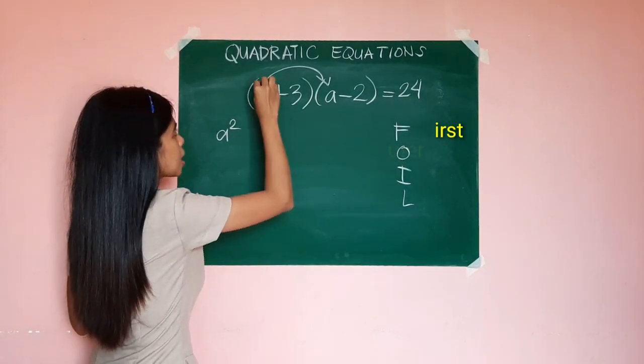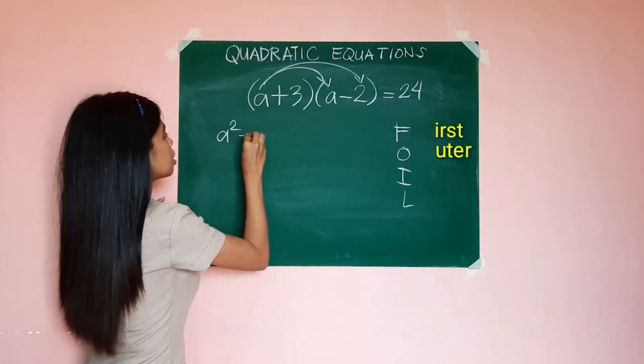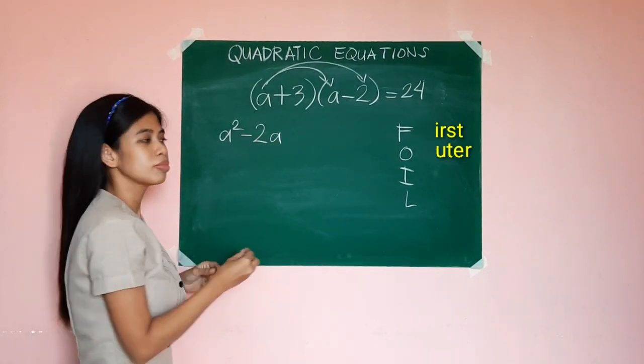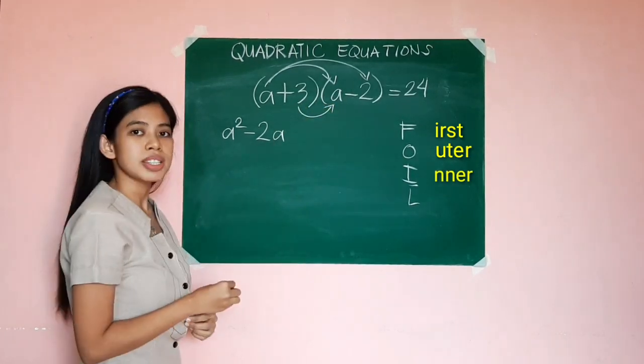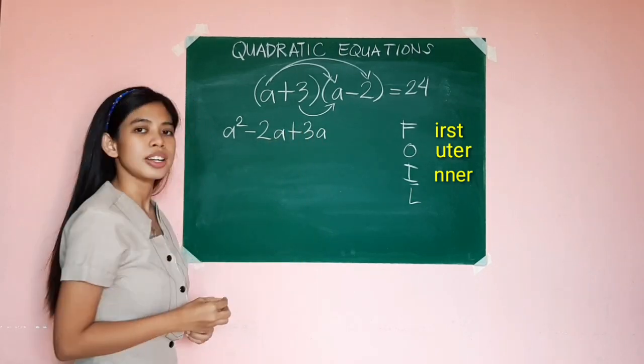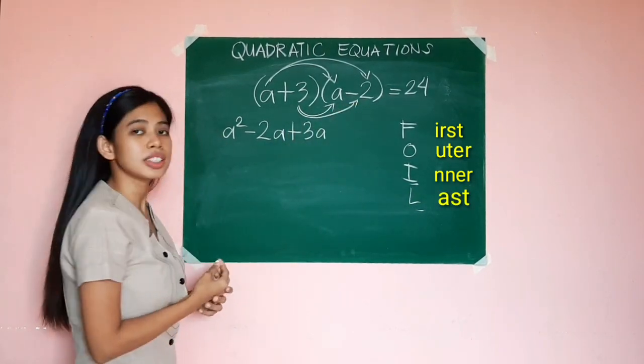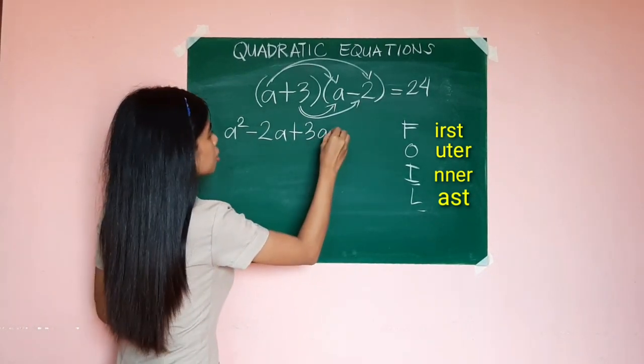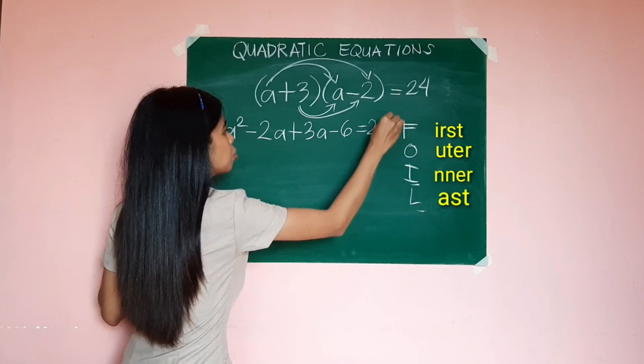Then the outer terms, a times negative 2 would be negative 2a. And the inner terms would be 3 times a, and that would give us positive 3a. And the last terms, 3 times negative 2 would give us negative 6, then equals 24.